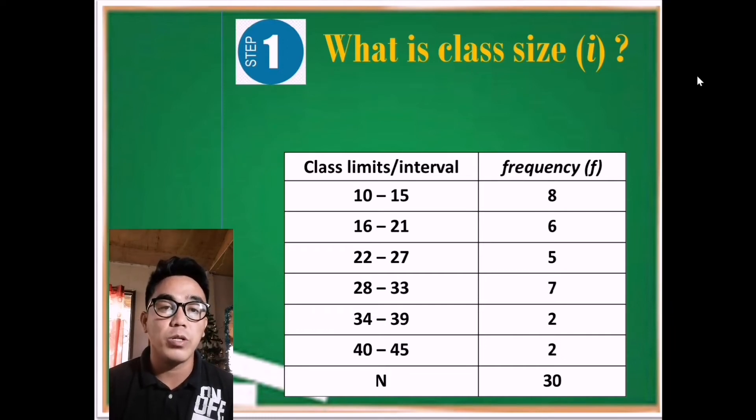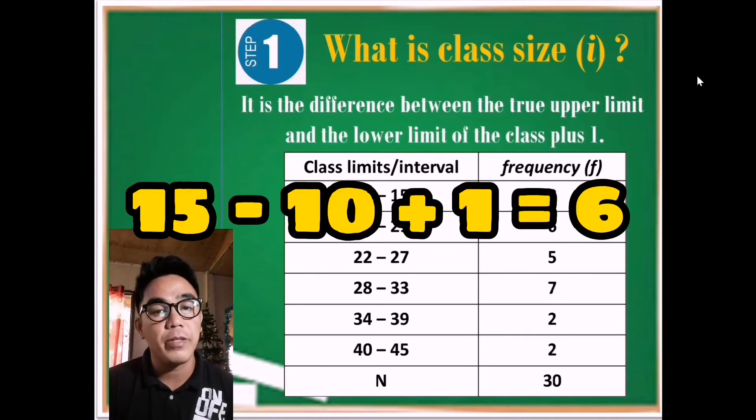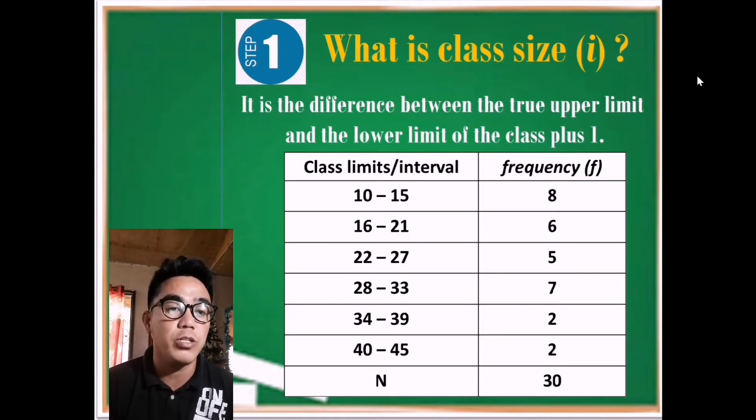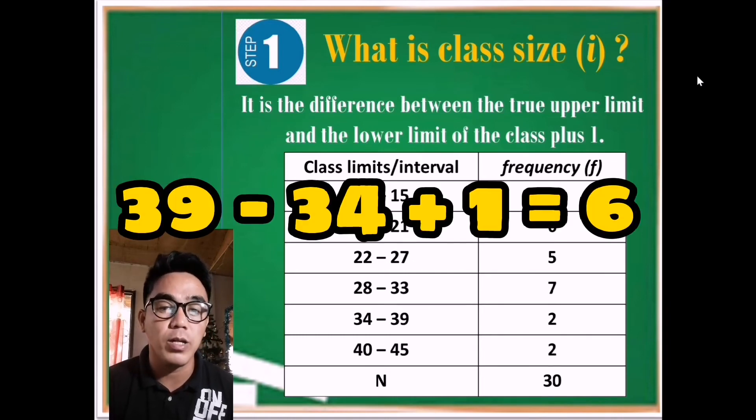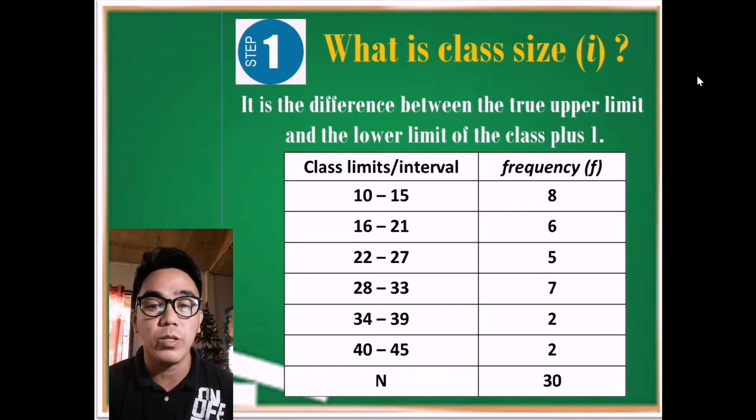In what way are we going to solve it using the frequency distribution? Simply, just subtract the upper limit from the lower limit then add by 1. Example: 15 minus 10 is 5 plus 1 is 6. The same as on the other rows. Example, 34 to 39: 39 minus 34 is 5 plus 1 is 6. So this is the way how we solve the class size or small i when the given is already in the frequency distribution.